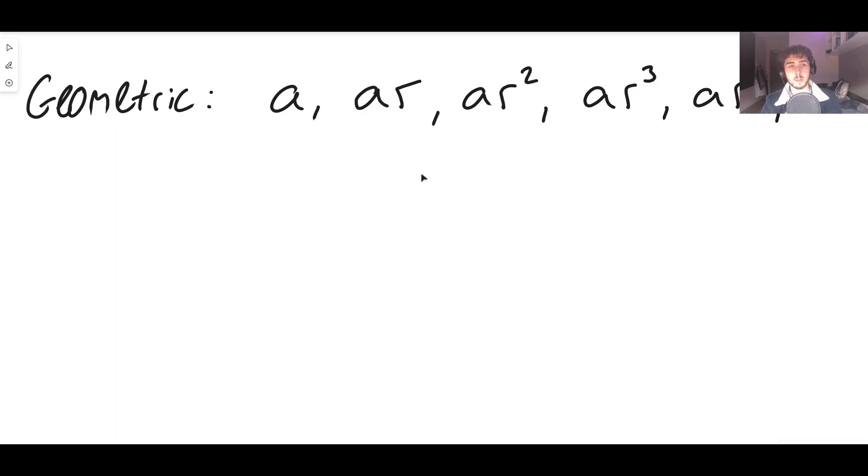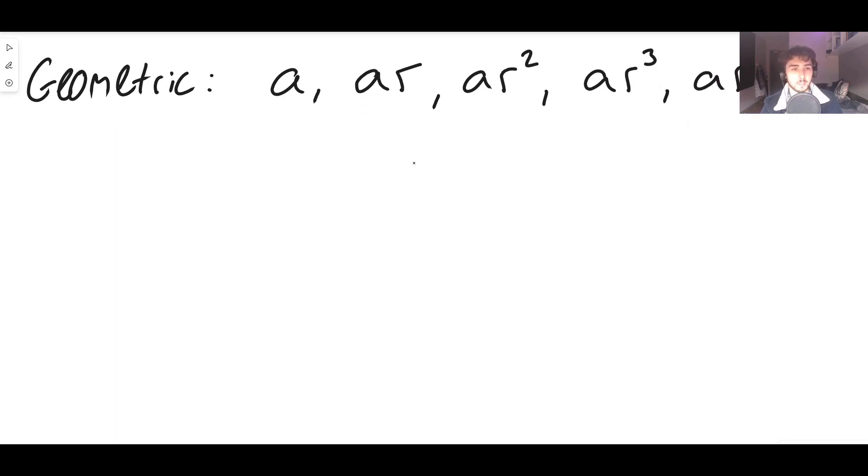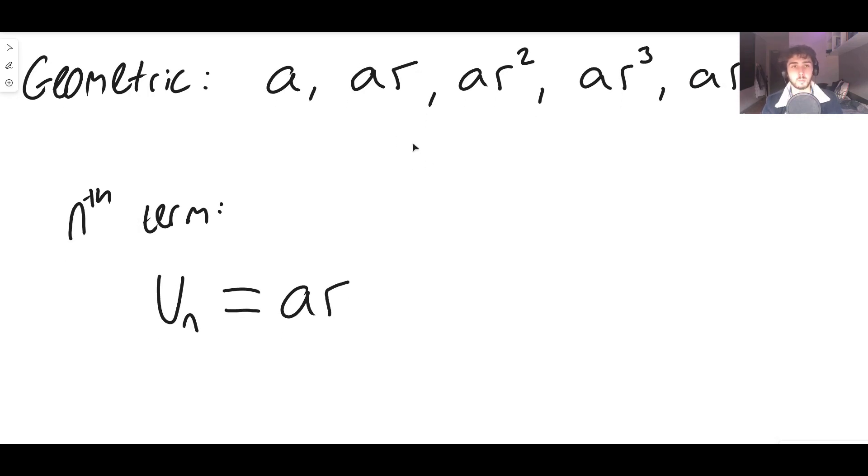So how do you find the nth term? Well, notice they all have a's in, so the nth term. And remember, we use the symbol u sub n, typically, for the nth term. It's definitely going to have an a in it, because every term has an a in it. It's also going to have an r in it, because every term has an r in it. And if we want the nth term, well, notice how the power of r is offset by one compared to the term that it is. So this is the first term, the second term, the third term, the fourth, the fifth.